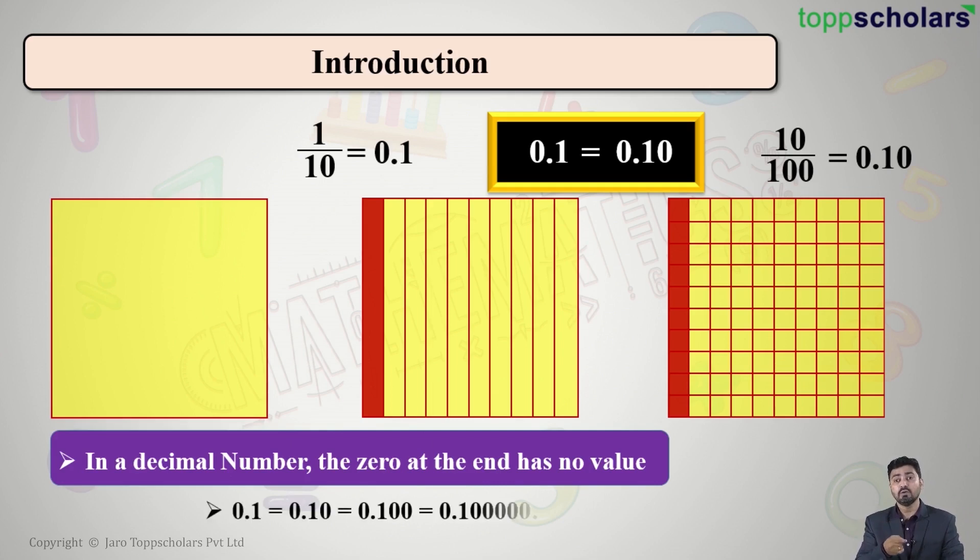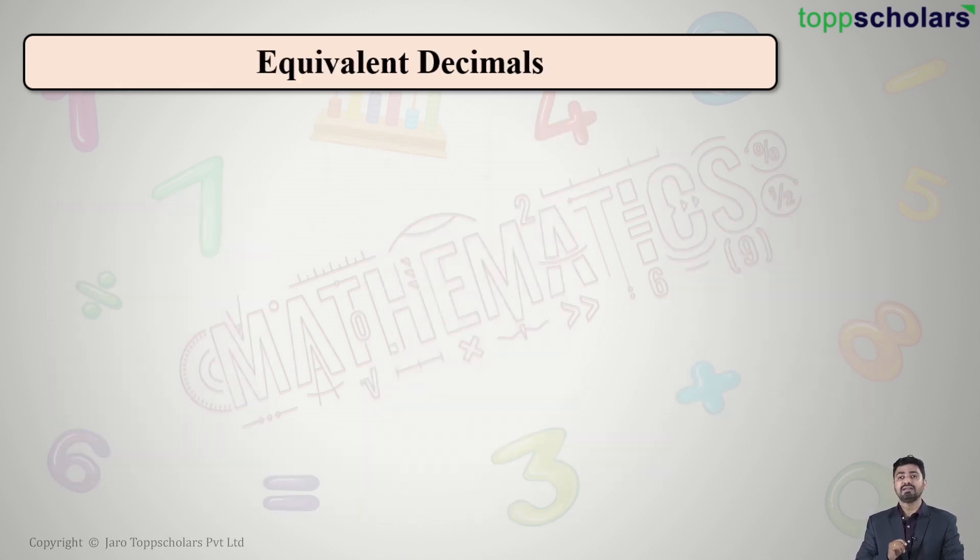That is why I have 0.1 equal to 0.10, also equal to 0.100, also equal to 0.1000, and so on. All the zeros on the end, that is on the extreme right side of a decimal number, have no value.